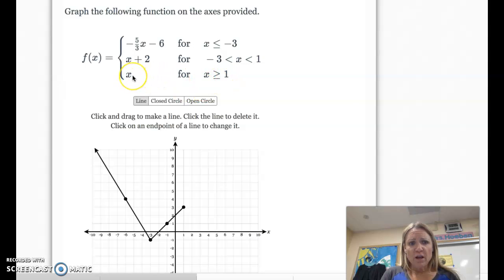So whatever number you plug in, you're going to get the same number out. So it would be the point 1, 1, 2, 2, 3, 3, 4, 4, 5, 5, and so on. So at 1, it should be 1, 1.